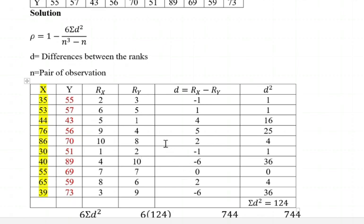After we have done the ranking, the next column, D, is the difference between the ranks. What you do is simply take the rank of x minus the rank of y. So the first one will be 2 minus 3, giving us negative 1. Then 6 minus 5, giving us 1. Then 5 minus 1, giving us 4. Then 9 minus 4, giving us 5. Then 10 minus 8, giving us 2. All the way up to 3 minus 9, giving us negative 6.